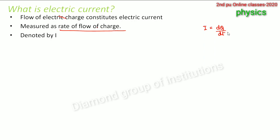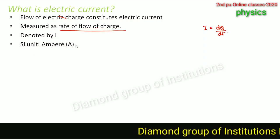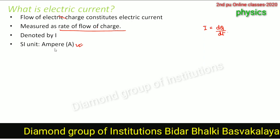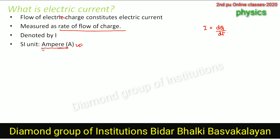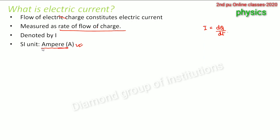Electric current is generally denoted by capital I. The SI unit of current is amperes, denoted by capital A. Just as we have the SI unit for charge as coulomb, we have the SI unit of electric current as ampere. We will define ampere in the next slide.